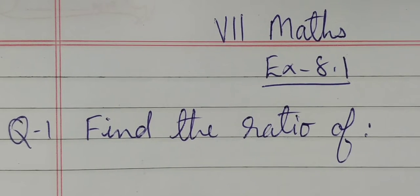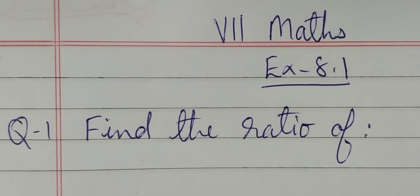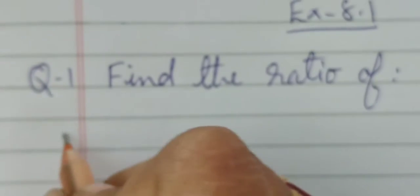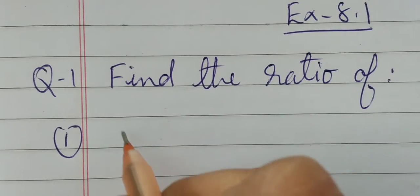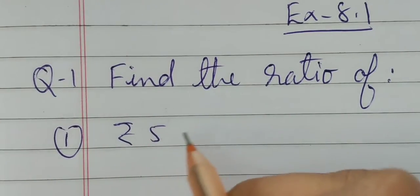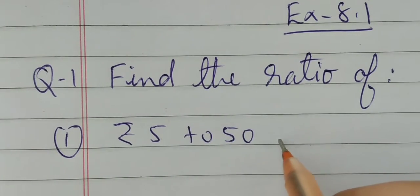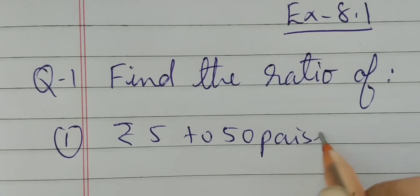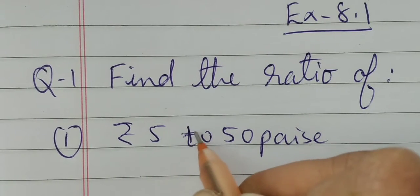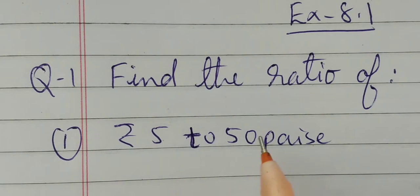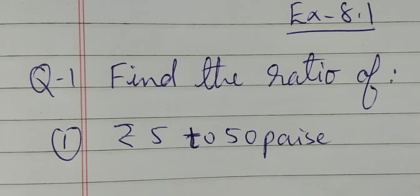Okay children, let's start with the first question under Exercise 8.1: find the ratio of rupees 5 to 50 paise. As I told you while explaining example number 1, you have to check the units whether they are same or not.